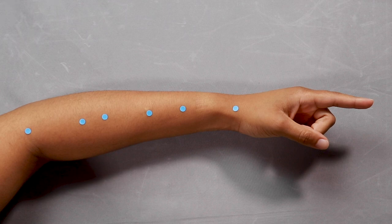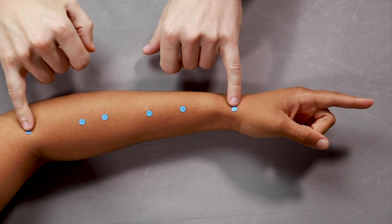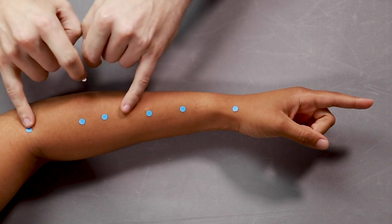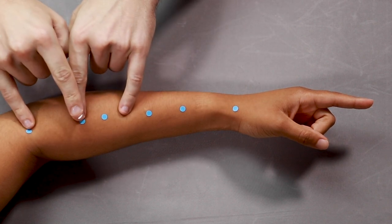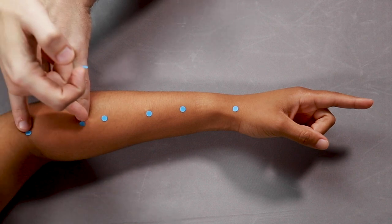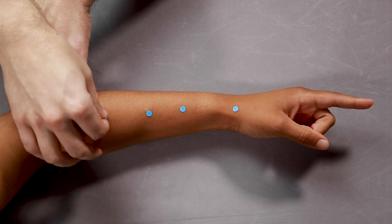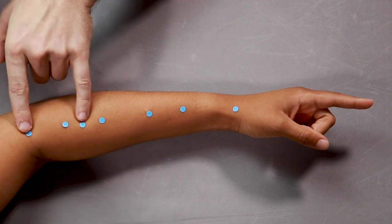The same thing on the other side for LI10. LI10 is 10 cun up, or 2 cun down. Here's 12 cun. Half of 12 is 6. Halfway between 6 and 12 is 9. This is 9 cun, 12 cun, 9, 10, 11, 12. We want 10 cun for LI10.